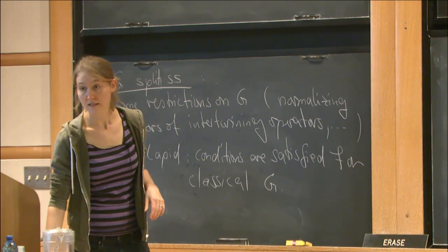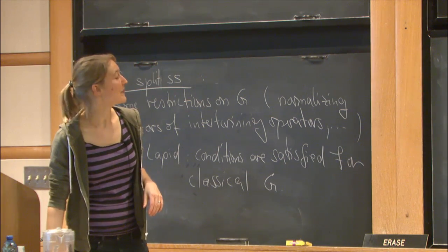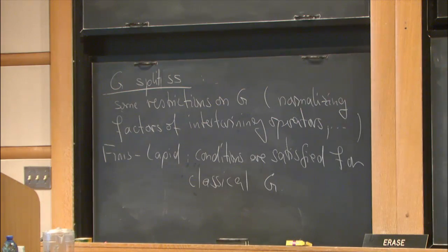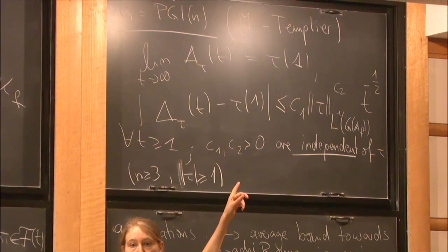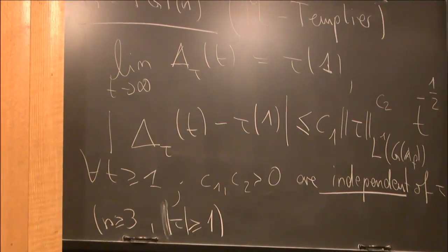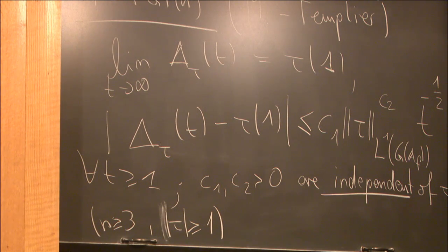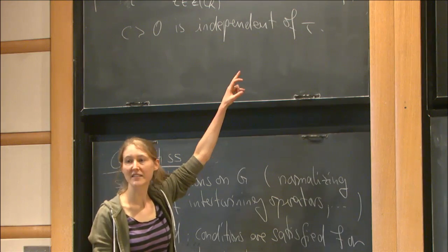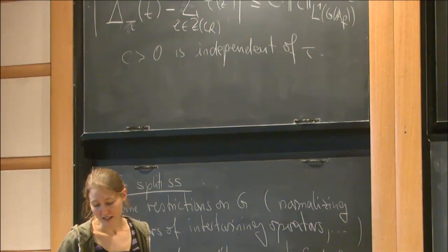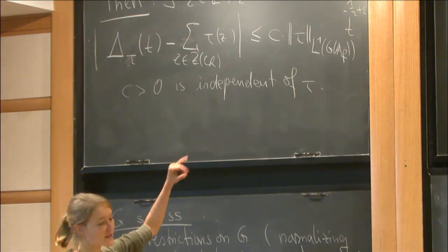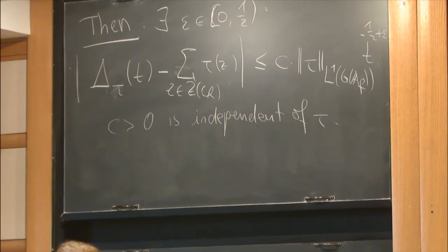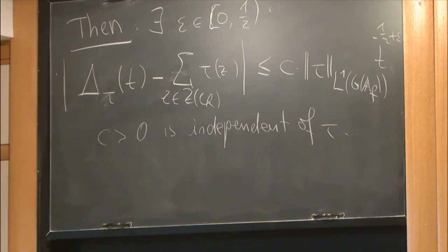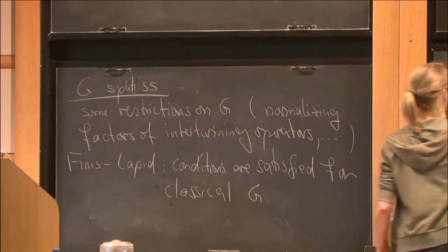Do we expect epsilon to be zero, or are there cases where epsilon is not zero? Actually, we expect more — this error term with minus one-half is not optimal. This minus one-half should probably be minus one, or one minus epsilon, something like that. So we are probably far from the true value, but at least we get something better in the degree of the Hecke operator. Even there it's not optimal — you should be able to go to some power of the L1 norm, like the L1 norm to some alpha for alpha between 0 and 1.